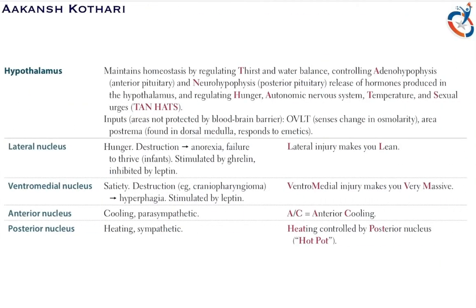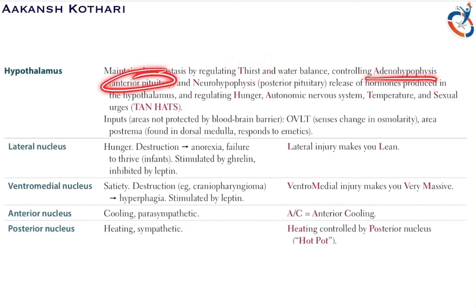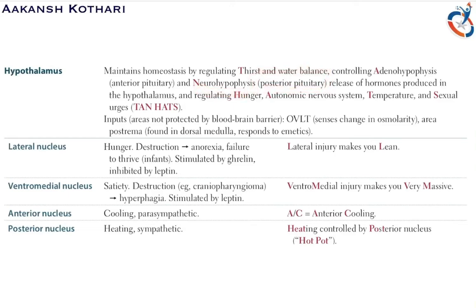organ which maintains homeostasis by regulating thirst, water balance, and controlling the adenohypophysis (the anterior pituitary) and the neurohypophysis (the posterior pituitary) by release of hormones produced in the hypothalamus. It also regulates hunger, the autonomic nervous system, temperature, and sexual urges.